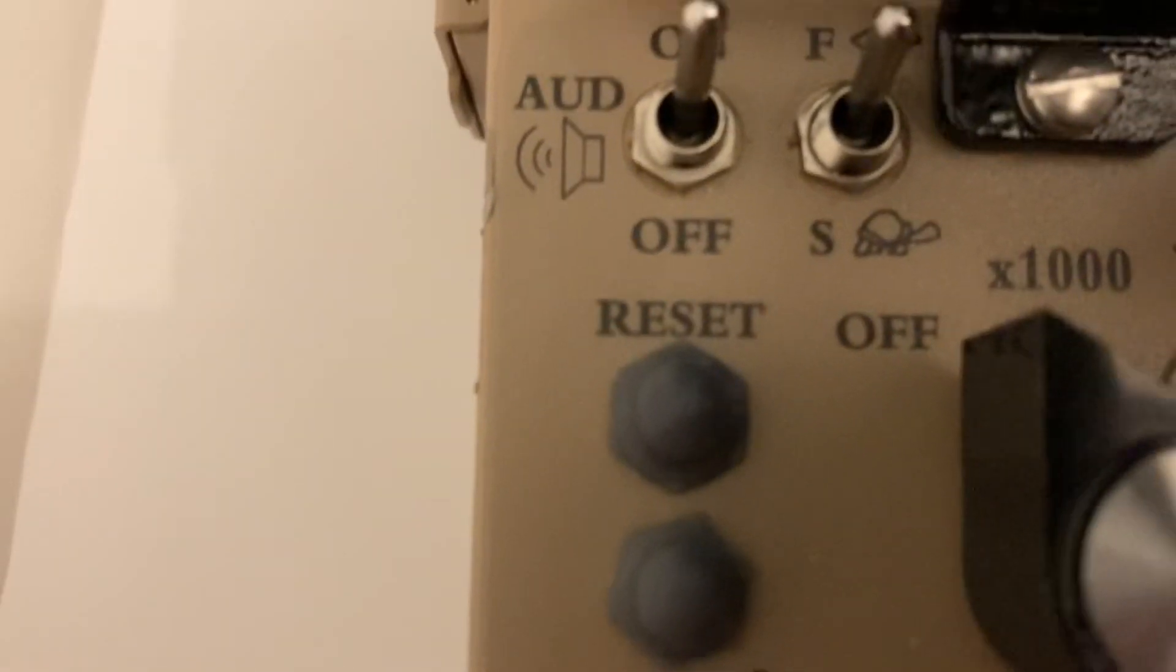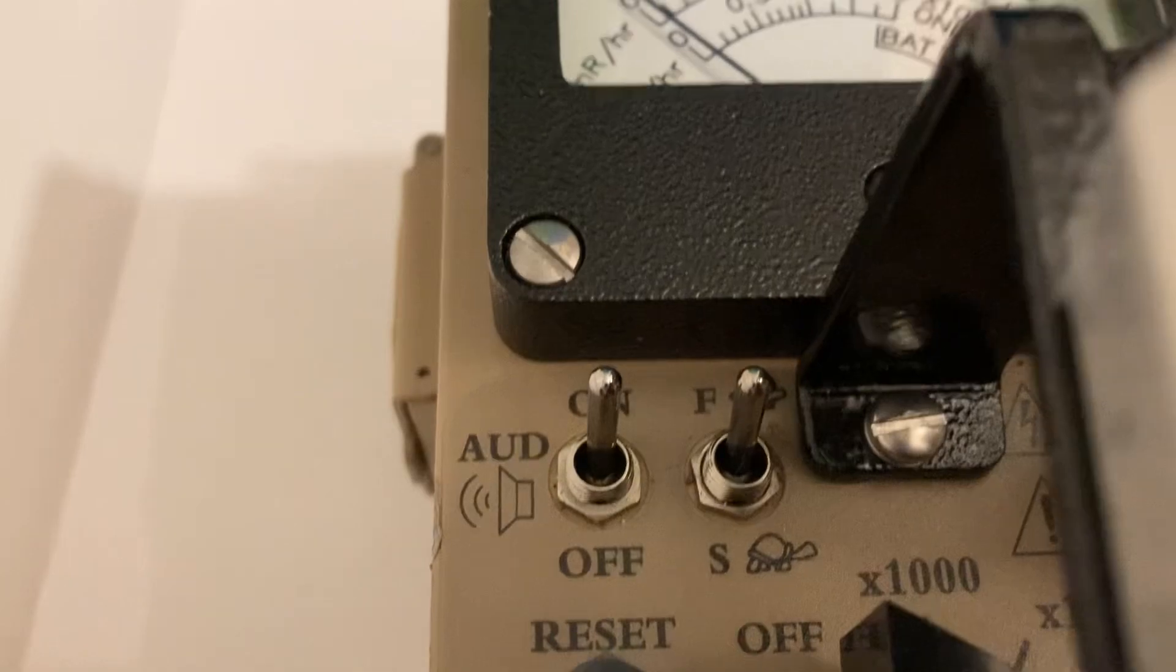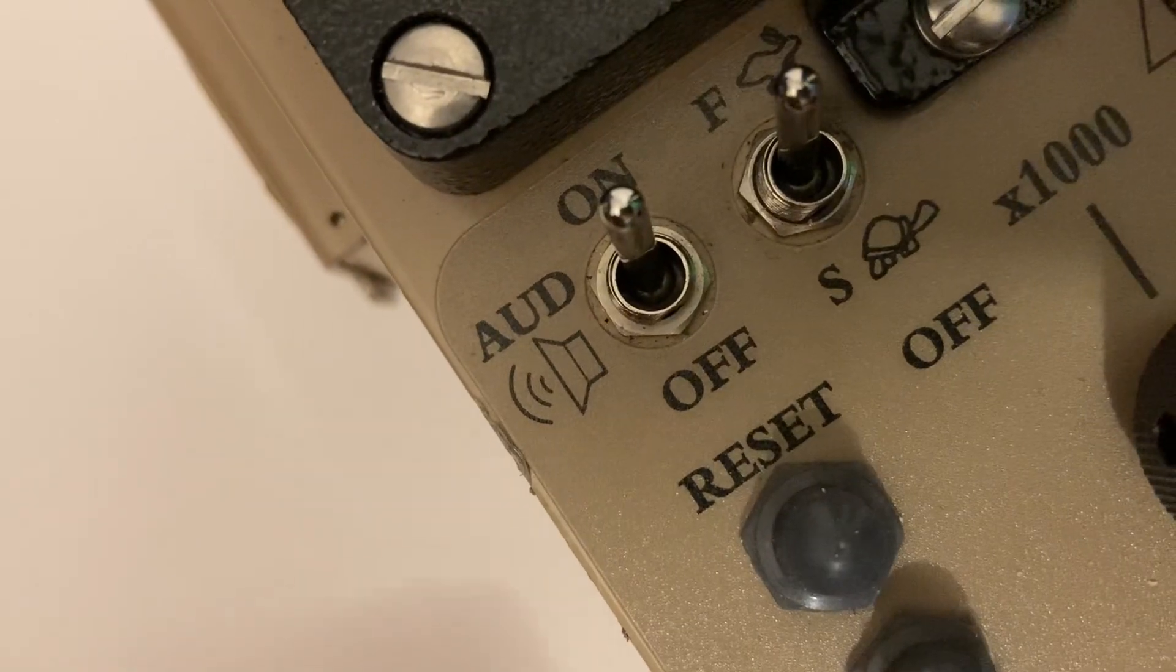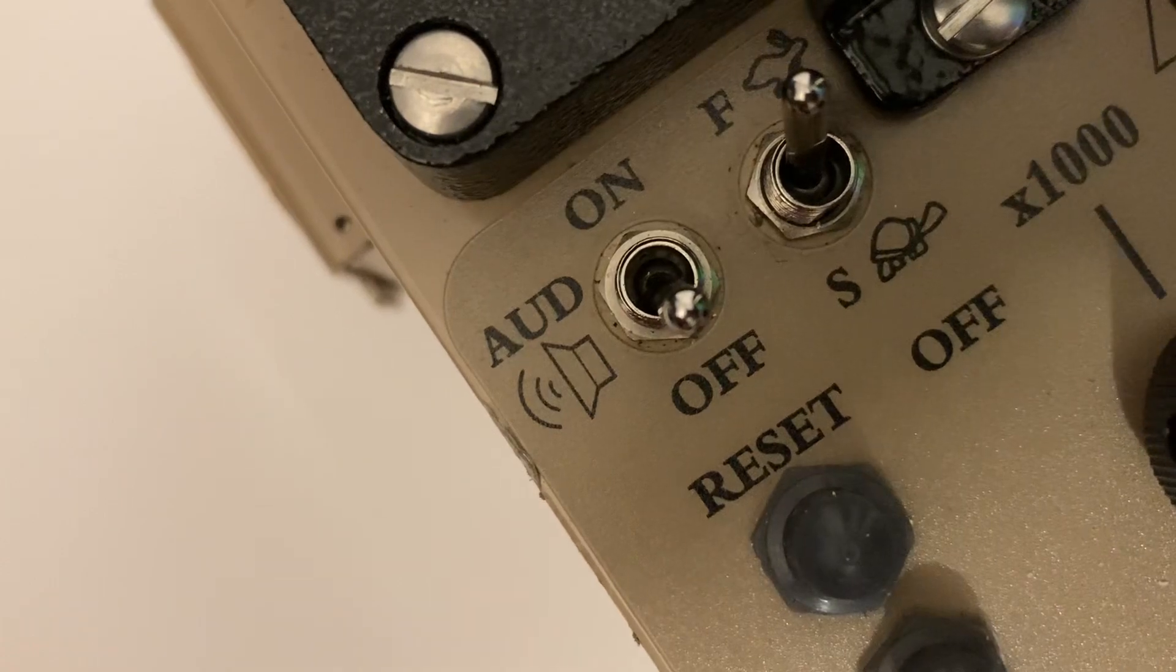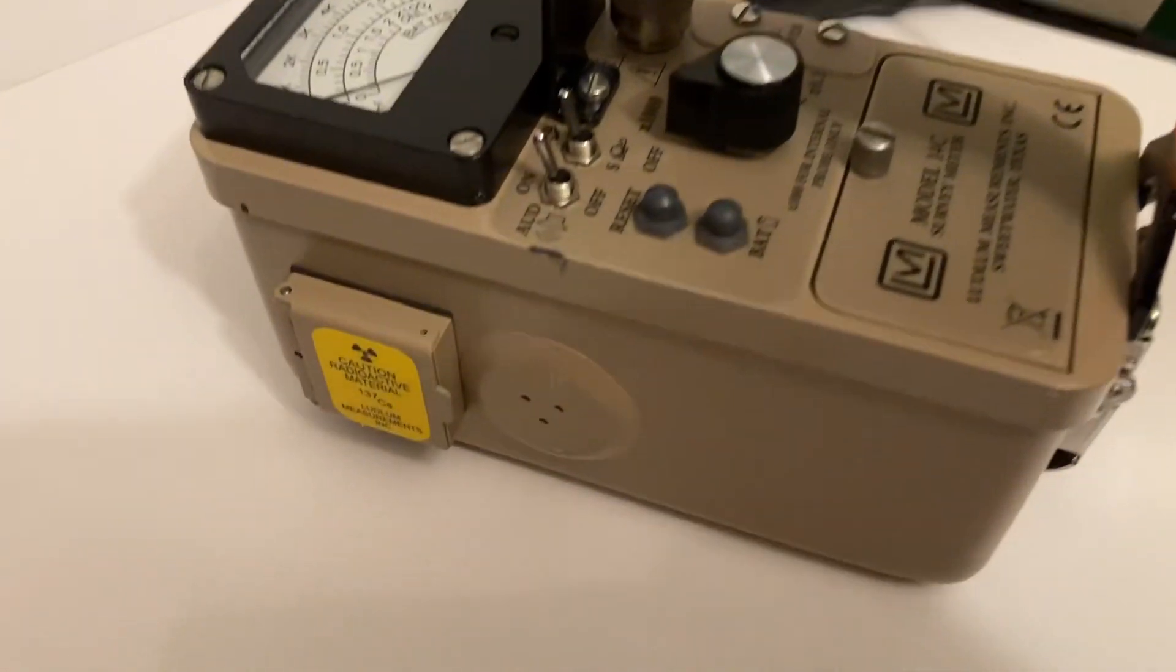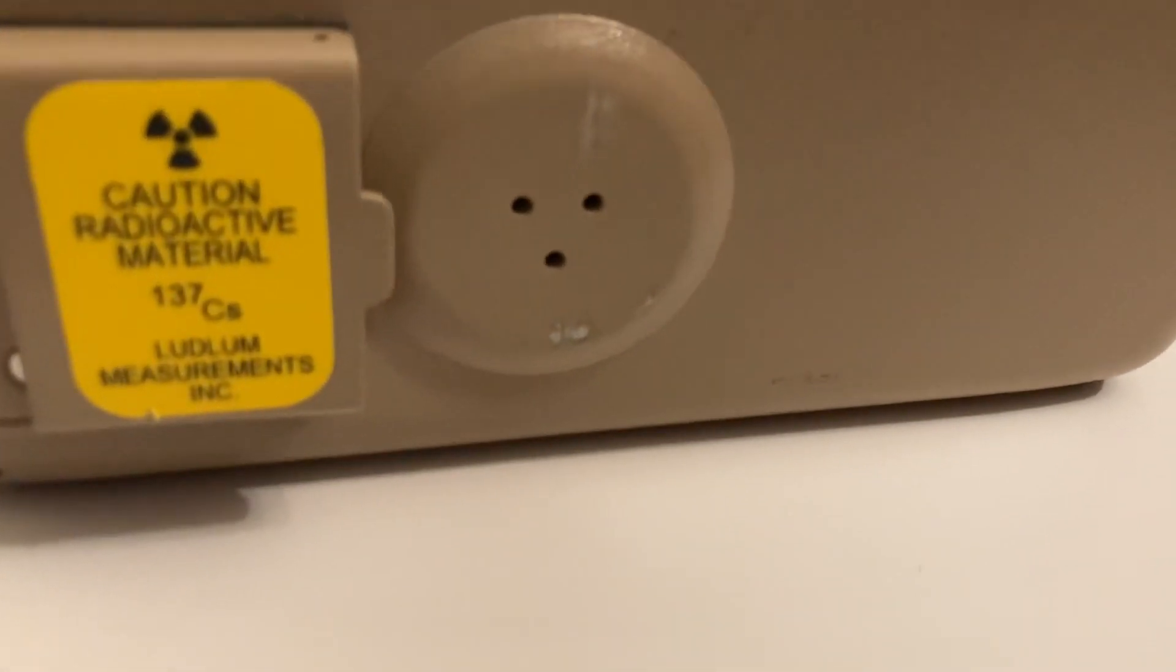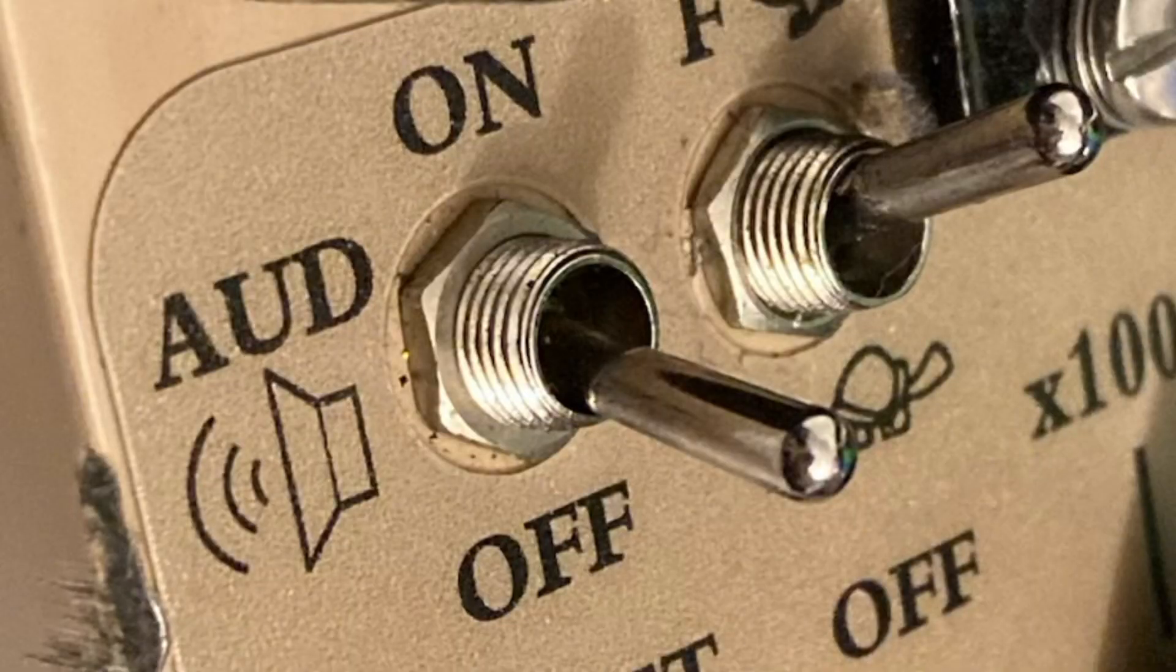Now we'll go over the controls on the instrument. You will see a switch labeled AUD. One position is on, the other position is off. This will turn the speaker on the side of the instrument on or off depending on if you need audio or not. If you don't need audio, make sure to leave the switch in the off position as to not waste the battery of the instrument.